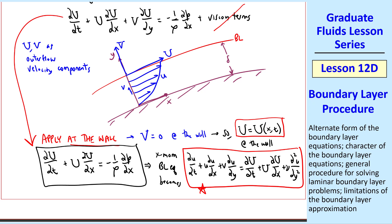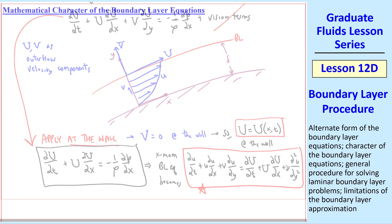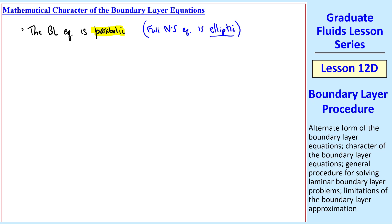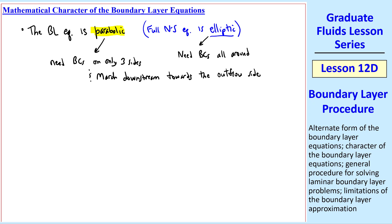We now have two equations — continuity and the x-momentum boundary layer equation — and two unknowns, little u and little v. The boundary layer equation is what mathematicians call parabolic, whereas the full Navier-Stokes equation is elliptic. For an elliptic equation, you need boundary conditions all around, but for a parabolic equation you need boundary conditions on only three sides in 2D flow, and you march downstream towards the outflow side.